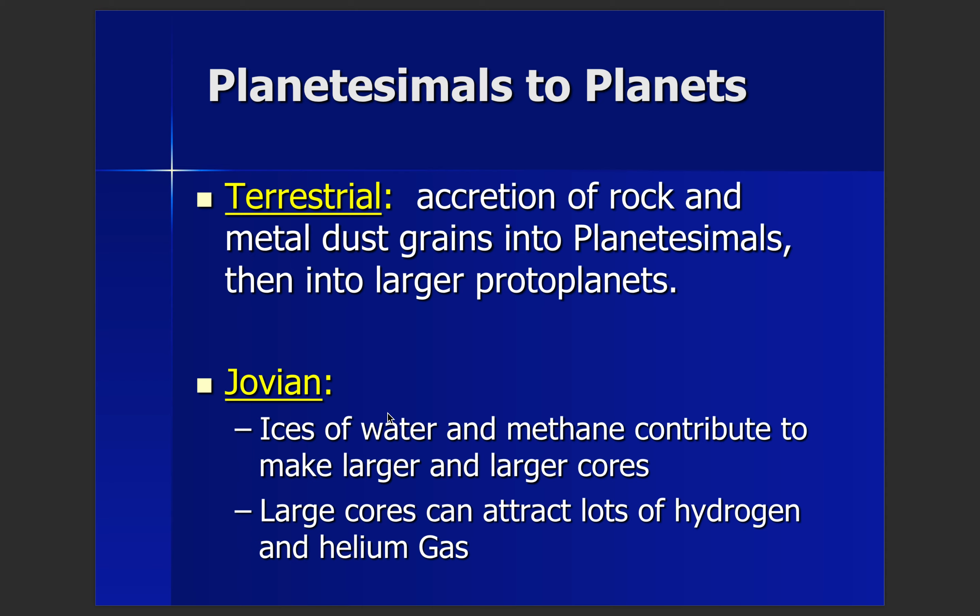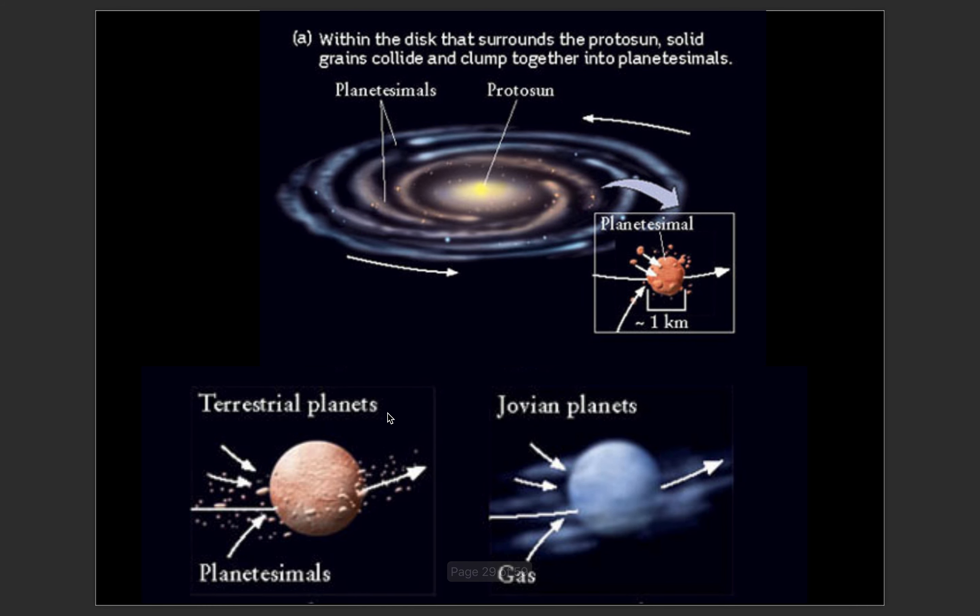For the Jovian planets, which are mainly made of ices, water, and methane, there are a couple of different ideas about how they formed. Some ideas say the gas formed first and then rocky materials were gravitationally pulled in. Others say the rocky part formed first and then gases accumulated around it. There's also a migration theory suggesting that outer planets migrated inward to collect rocky material, then migrated back outward to condense gas and dust. We're still figuring out exactly how the Jovian planets formed.